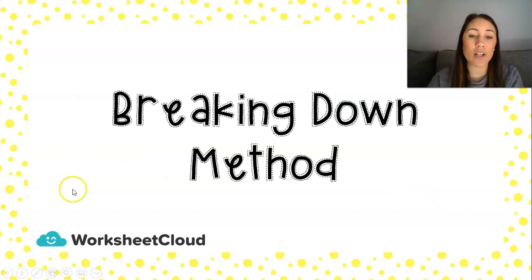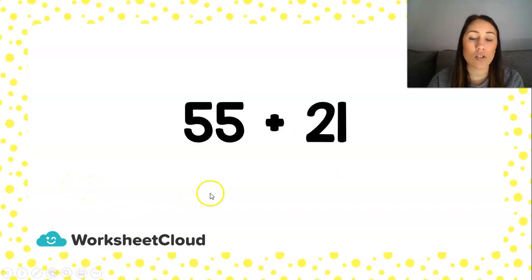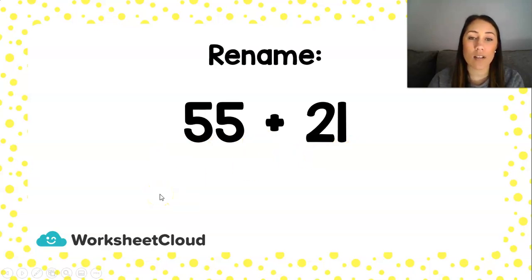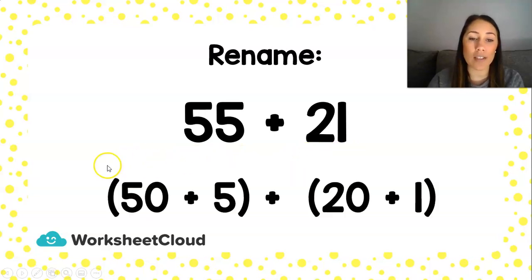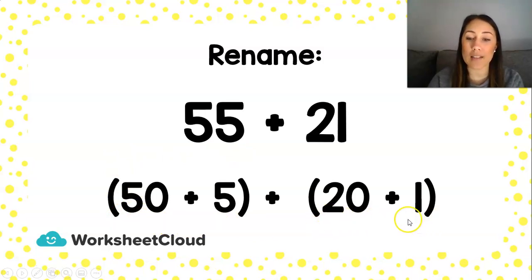So let's have a look at the Breaking Down Method that we've done already — adding. We're going to have a look at this example: 55 plus 21. Now we first want to rename both of these numbers. So 55 is a 50 plus a 5, and 21 is a 20 plus a 1.